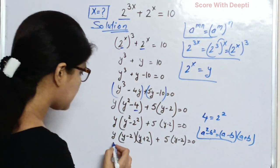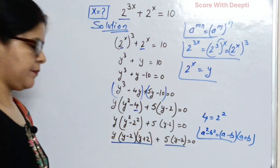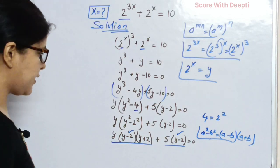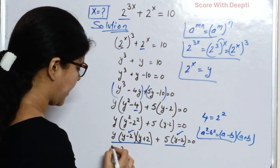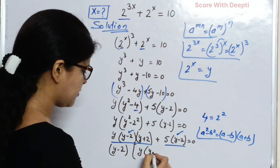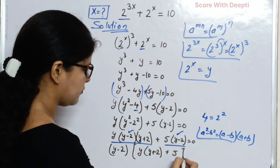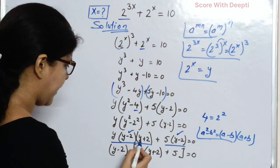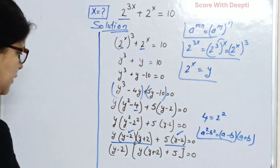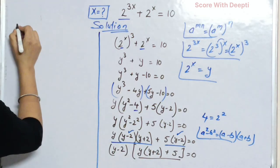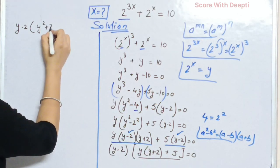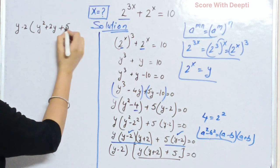Our next step: this is our first term and this is our second term. Here y minus 2 and y minus 2 are both the same, so we take out common factor y minus 2. We write y minus 2, and in the bracket we write y into y plus 2 plus 5. Solving this, we get y minus 2 into y squared plus 2y plus 5 equal to 0.